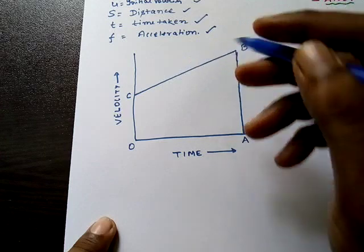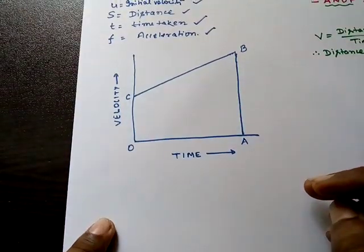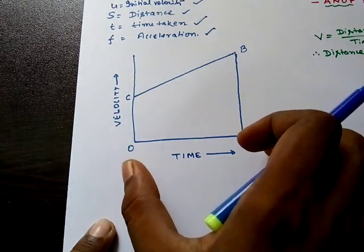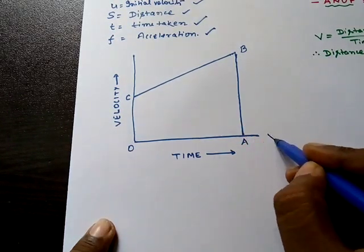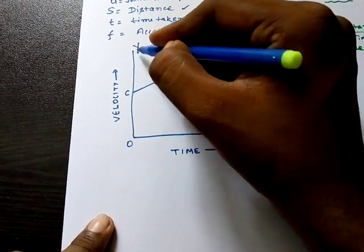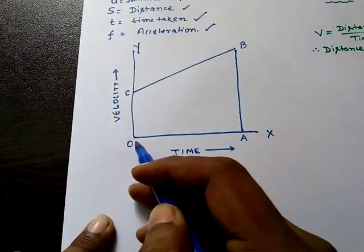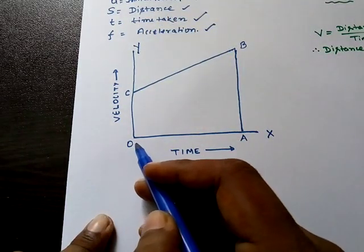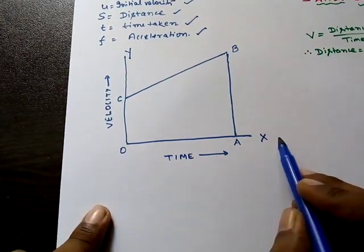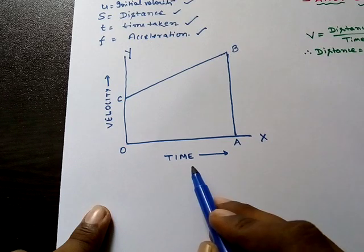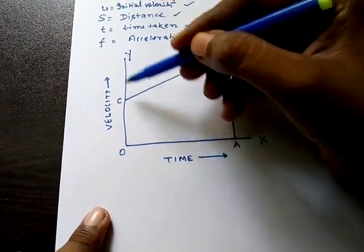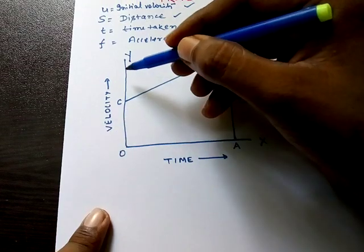Now we draw two perpendicular lines. The horizontal line is the x-axis and the vertical line is the y-axis; they meet at the origin O. Time is plotted along the x-axis, so it is called the time axis, and velocity is plotted along the y-axis, so it is called the velocity axis.